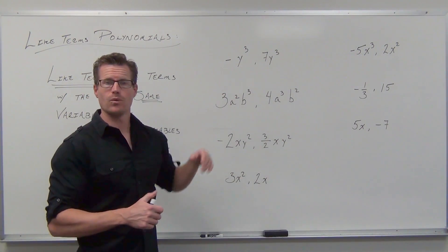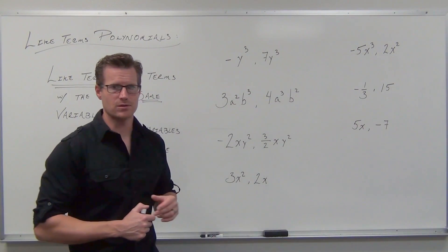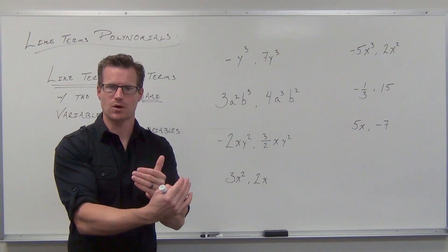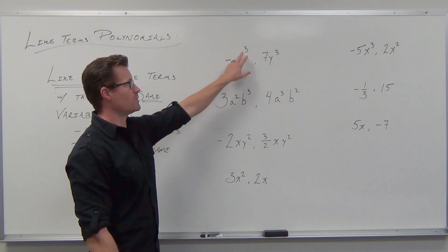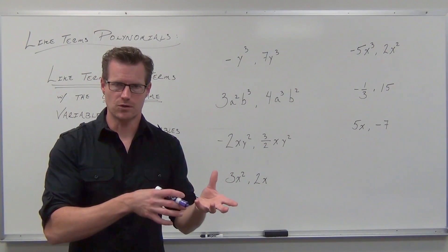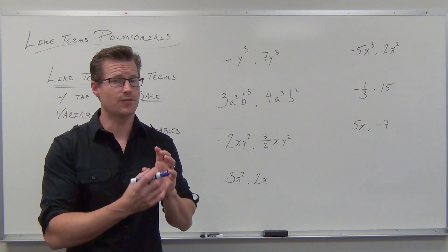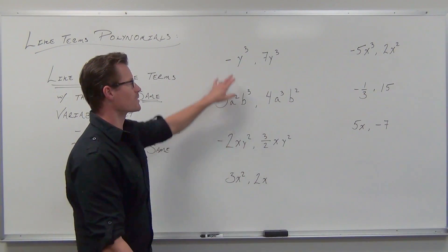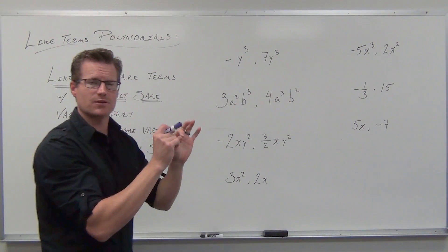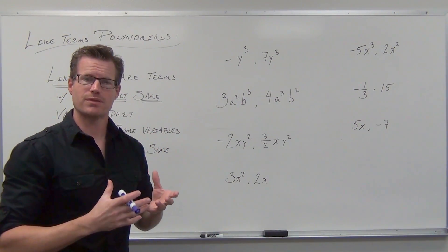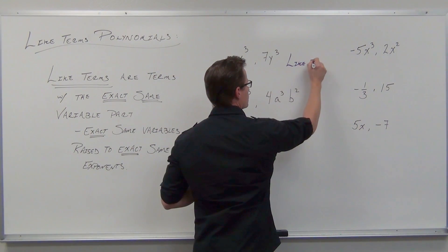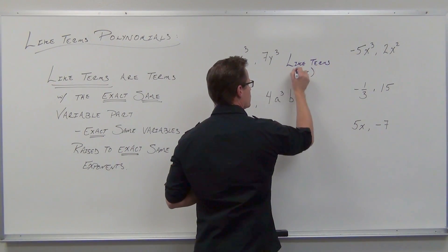Let's look at the first two terms. I have negative 3y³ and positive 7y³. Notice — I still need you good at coefficients, but I need you even more focused on what the variables and exponents are. Here the coefficient is negative 3 and the degree is 3. The other coefficient is 7 and the degree is also 3. Are they like terms? Like terms are defined as having the same exact variable part — same variables raised to the same powers. The variable part here is y³, and the variable part there is y³. That's the same exact variable raised to the same exact power. These are like terms.